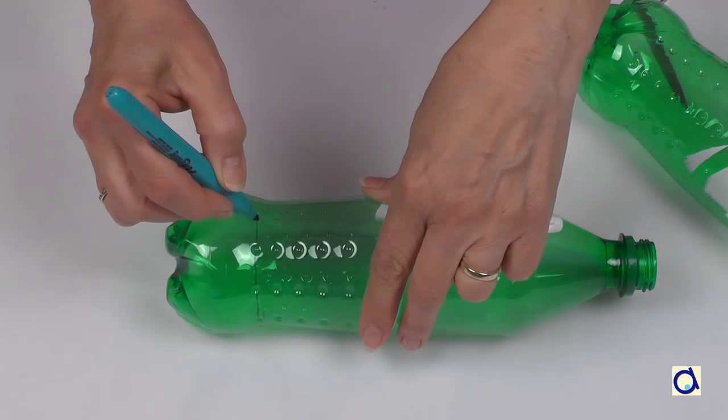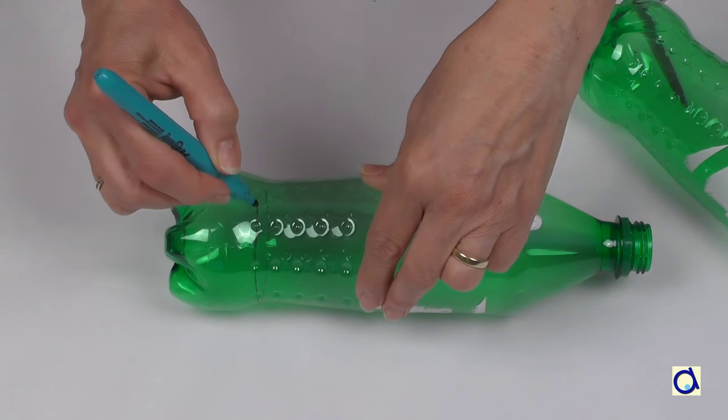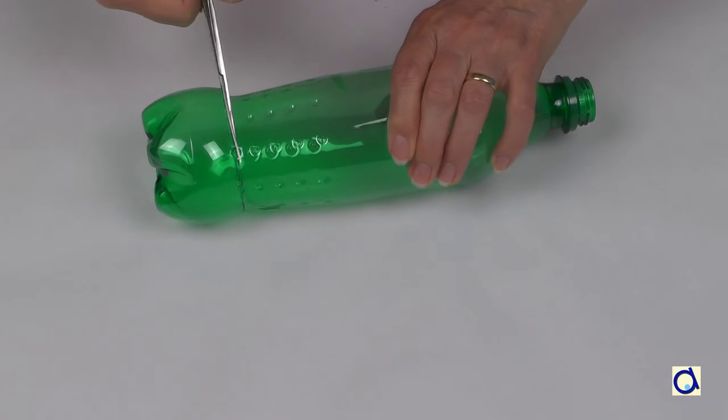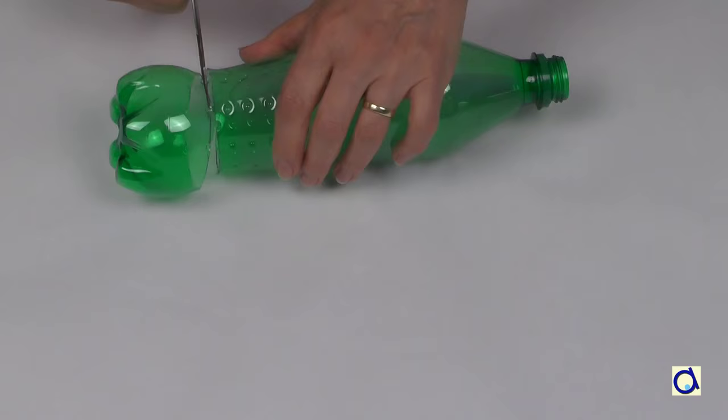Take a first bottle and make a dotted line around at the height where the bottle is becoming narrower. With small sharp scissors, make a hole in the plastic and then cut the bottom of the bottle following the dotted line.